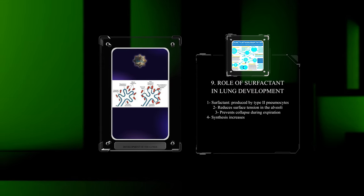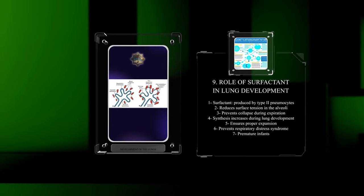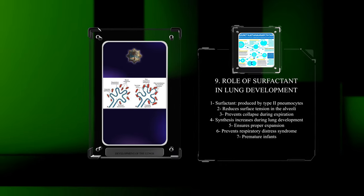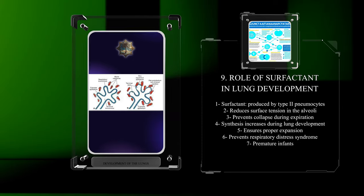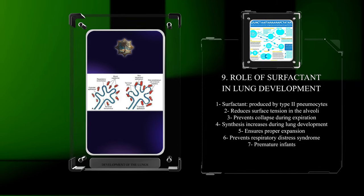Surfactant, produced by type 2 pneumocytes, reduces surface tension in the alveoli, preventing collapse during expiration. Its synthesis increases during lung development, ensuring proper expansion and preventing respiratory distress syndrome in premature infants.